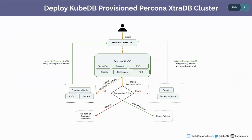Here is the cluster architecture. We have different termination policies: Delete, WipeOut, DoNotTerminate, and Halt. If the termination policy is Delete, it will keep the secrets and snapshots of the database. If it is DoNotTerminate, it will reject deletion. If it is WipeOut, it will remove all traces of the database resources. If it is Halt, it will also store the PVCs.